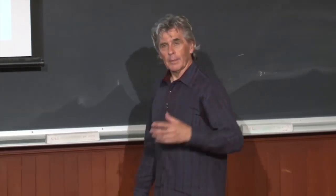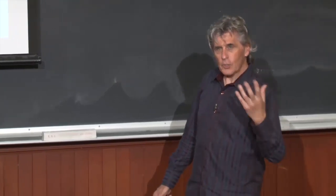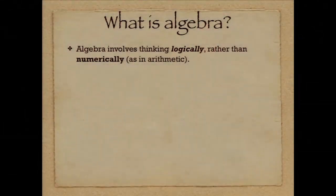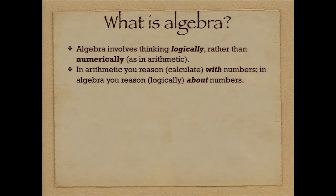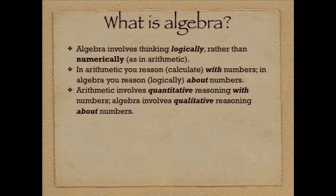So the key distinction is it's logical thinking rather than numerical quantitative thinking. It's not calculating with numbers. It's reasoning logically about numbers. Whereas arithmetic is definitely quantitative, algebra is very much a qualitative discipline, but it's focused on numbers. This kind of algebra is still focused on numbers.